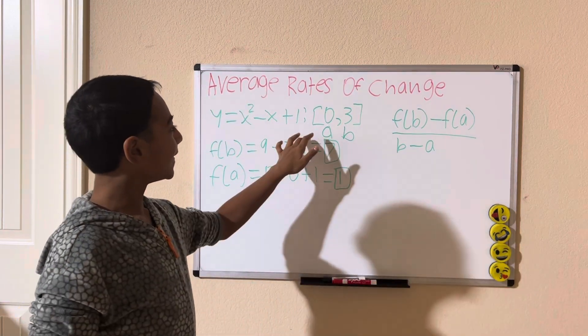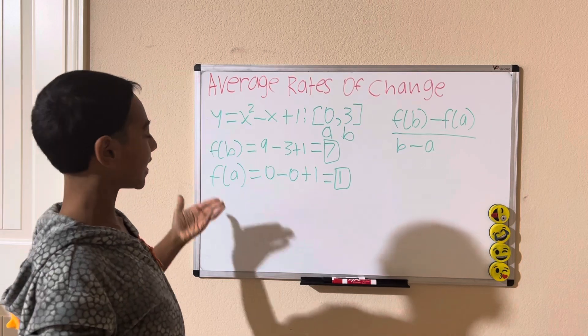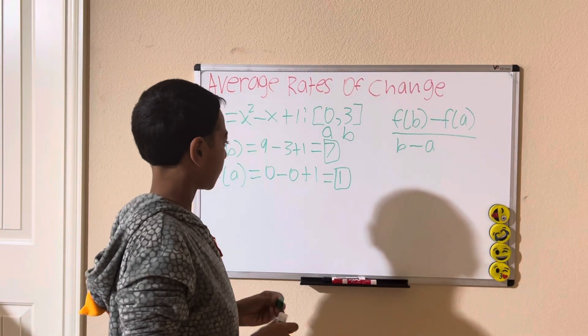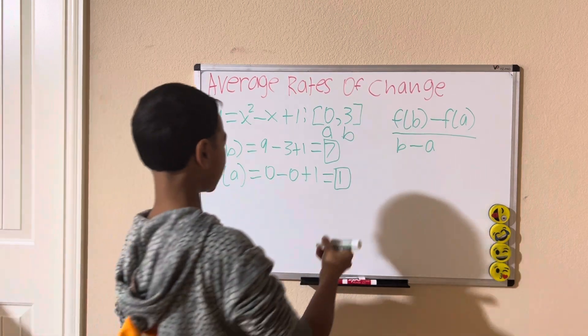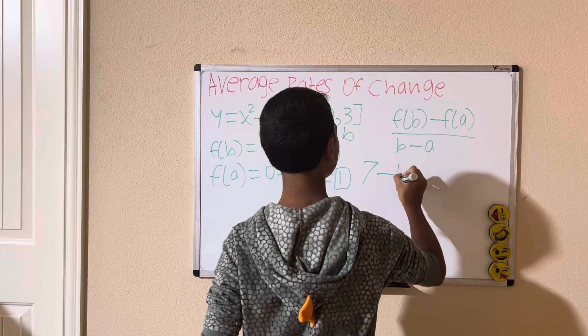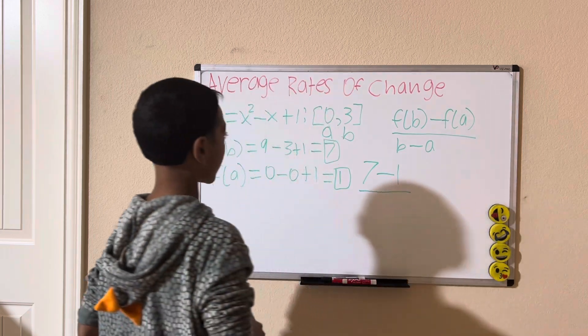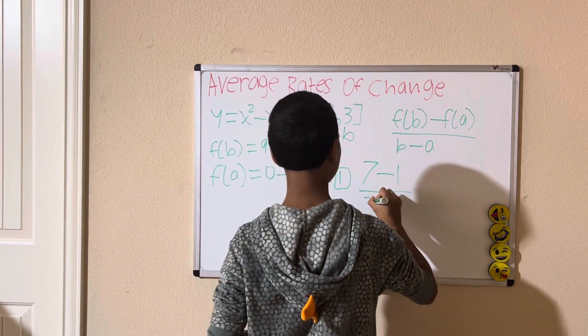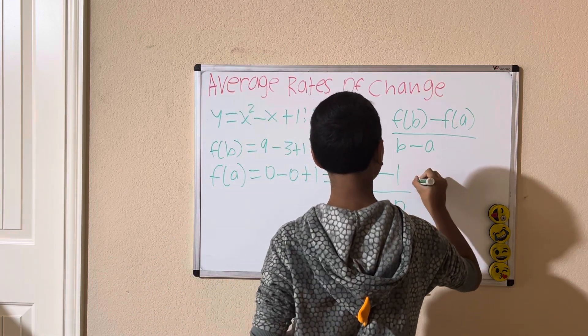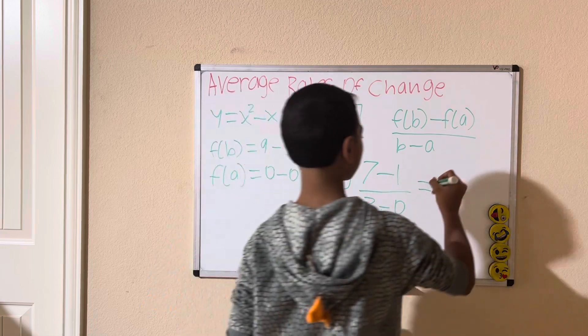Now that we got a, b, f of a, and f of b, we can plug it into the formula, and that's our average rate of change. So, f of b is 7, so we're going to have 7 minus 1, divided by regular b, which is 3, minus 0, which gives you 6 divided by 3, which is 2.